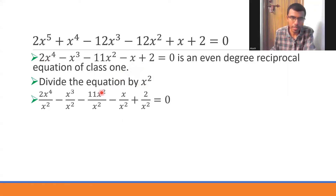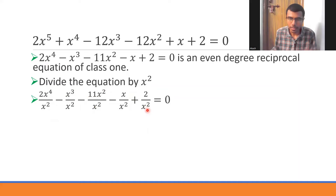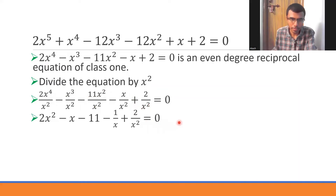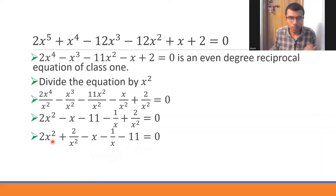Dividing each term by x²: x⁴/x² = x², x³/x² = x, the -11x²/x² = -11 remains, -x/x² = -1/x, and 2/x² stays. After dividing, group terms: 2x² and 2/x² together, -x and -1/x together, and -11 at the end. Factor out 2 from the first group and -1 from the second group.